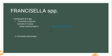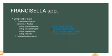Francisella tularensis consists of four subspecies: subspecies tularensis type A, subspecies holarctica type B, subspecies mediasiatica, and subspecies novicida. Subspecies tularensis type A causes severe disease, while subspecies holarctica type B and mediasiatica produce similar diseases to type A but are rarely fatal. Subspecies novicida is an opportunistic pathogen.